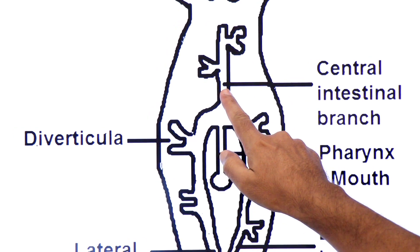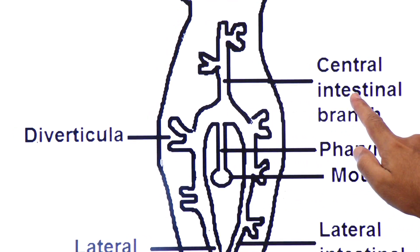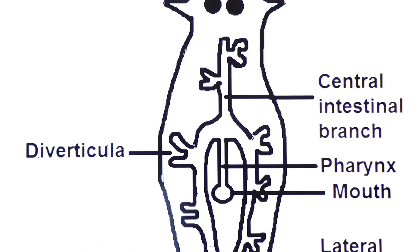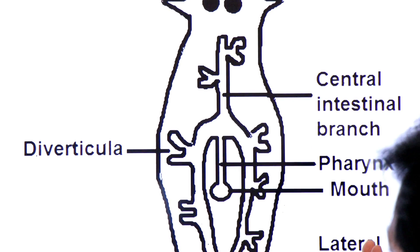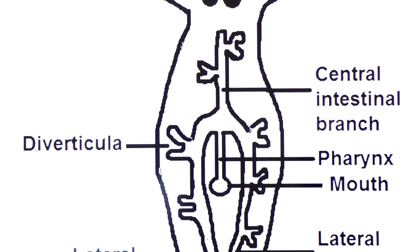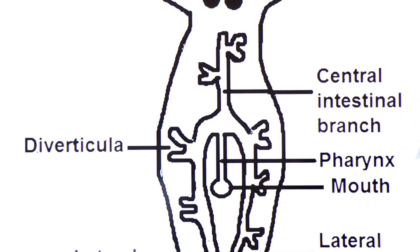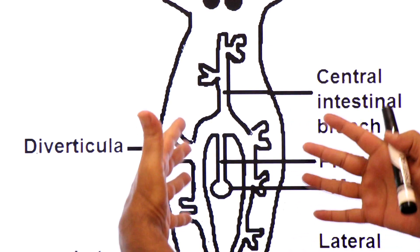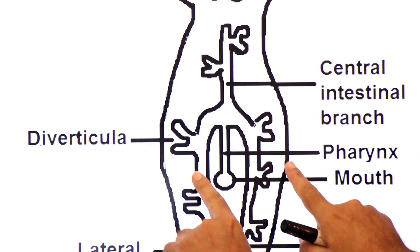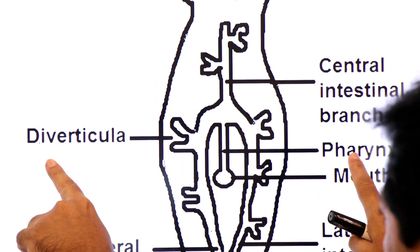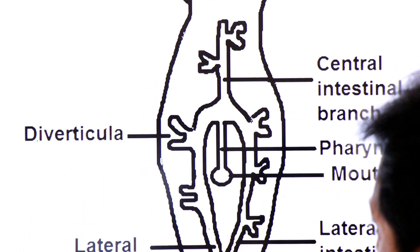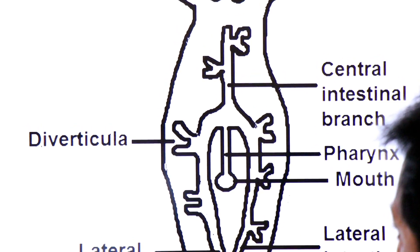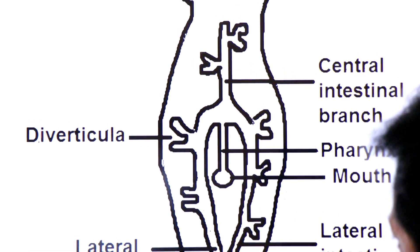The intestine is also called the gastro-vascular cavity, and it has three branches: first, the central intestinal branch, and then two lateral intestinal branches. From all three branches of the intestine, smaller branches arise called diverticula, which increase the surface area.